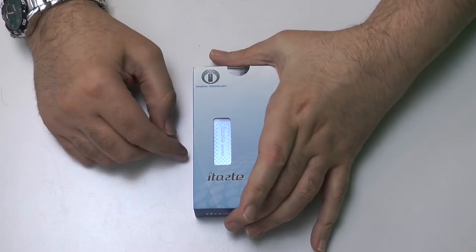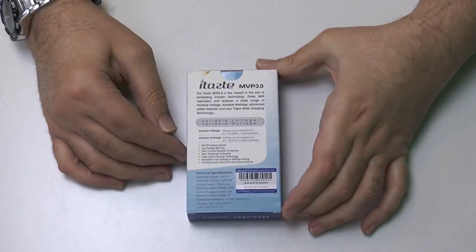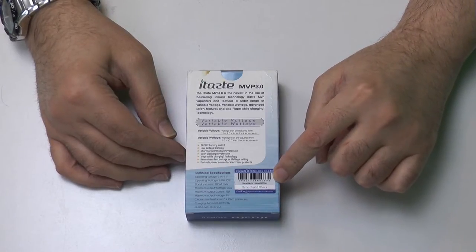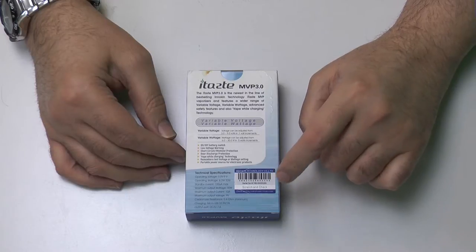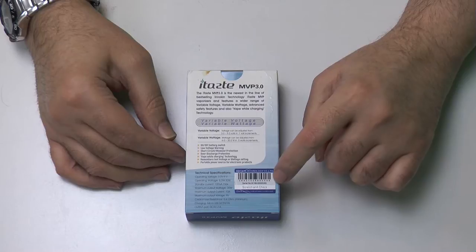Let's take a look at the outside of the box and then we'll flip inside. On the outside of the box you will see the obligatory Innokin Security Scratch and Check label which all true, proper Innokin devices come with.